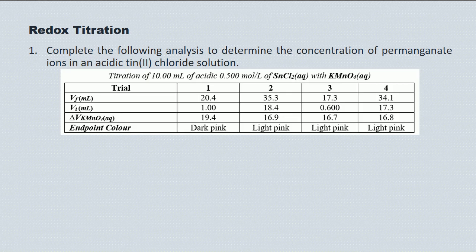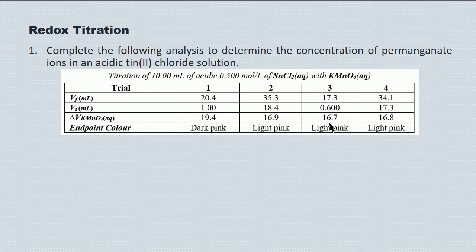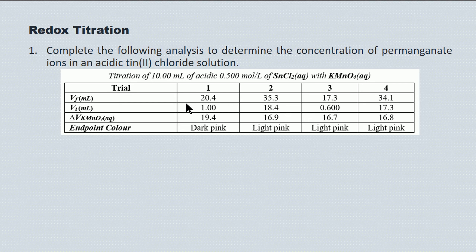These are your experimental results. We're titrating 10.00 milliliters of acidic 0.500 mol/L tin(II) chloride with potassium permanganate. We've run four trials. You'll notice the first result for the volume of permanganate is at variance to the other three — the other three are closely bunched and average 16.8 milliliters. But the first trial is almost three milliliters higher, the end point was much darker, and typically we're looking for a light pink end point with permanganate. So we discard the first result — there was an overshoot.